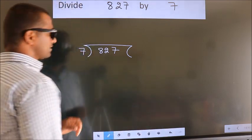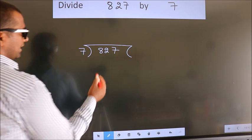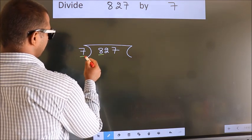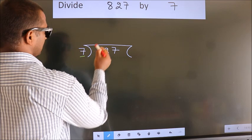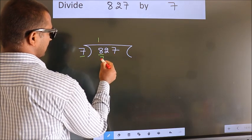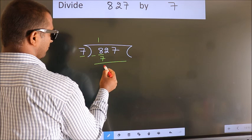This is your step 1. Next, here we have 8. Here 7. A number close to 8 in the 7 table is 7 once 7. Now we should subtract. We get 1.